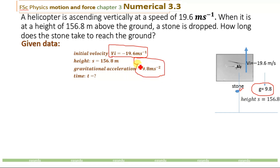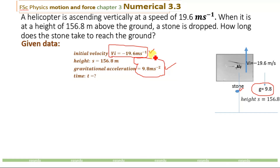If you take the acceleration positive, then you will have to take the initial velocity negative. If you take the initial velocity positive, then you will have to take the acceleration negative. I have taken the acceleration — which is 9.8 meters per second squared under gravitational force — as positive, since this stone is going downwards. So we have to take the velocity negative. The distance the stone will travel is the height of 156.8 meters from the ground when it is dropped from the helicopter.